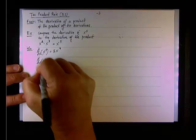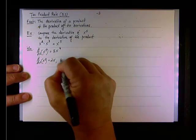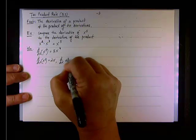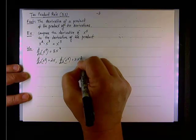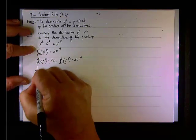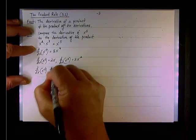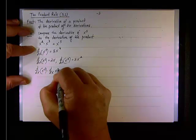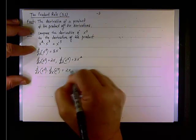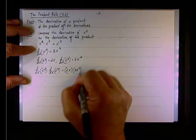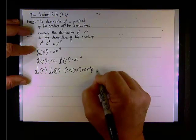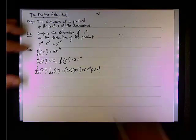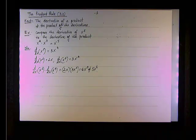Now, d/dx of x squared is 2x and d/dx of x cubed is 3x squared. And if we do the product of the derivatives, you come up with 6x cubed, and this is different than, it's not equal to 5x to the fourth. So, very quickly, Leibniz realized that this assumption was incorrect.